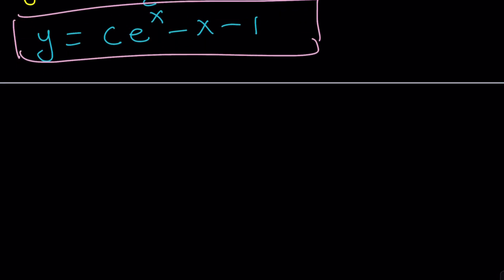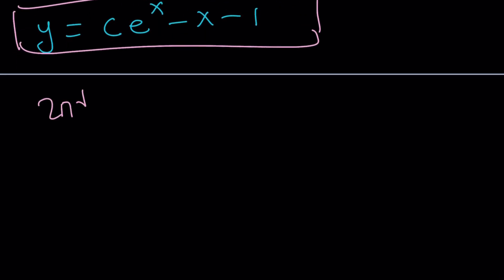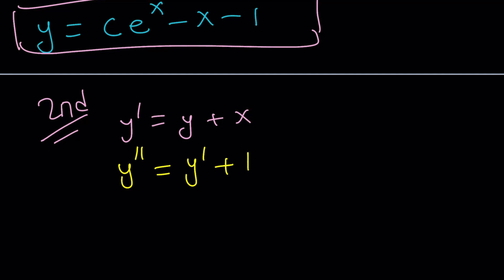Now for the second method. Our equation is y prime equals y plus x. We're going to differentiate both sides until the non-derivative terms disappear. Differentiating once gives y double prime equals y prime plus 1. Differentiating again gives y triple prime equals y double prime. The derivative of 1 is 0, so all constants have disappeared.